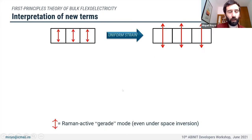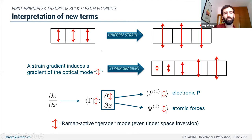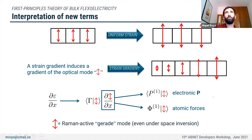To understand the physical meaning of these additional terms appearing in flexoelectricity, consider a centrosymmetric material with an optical phonon mode that couples directly with strain. Since the material is centrosymmetric, this would be a gerade mode associated with Raman activity. If we apply a strain gradient, this gradient also induces a gradient in the amplitude of this mode, which in turn produces an electronic polarization quantified by the P1 tensor and a set of finite forces on polar modes. These new contributions can be interpreted as an indirect contribution to flexoelectricity, active for example from the Raman mode in silicon or the tilt of oxygen octahedra in perovskite oxides.